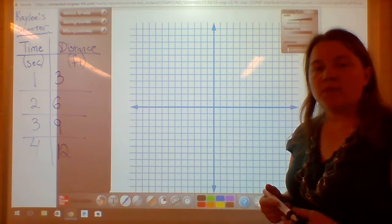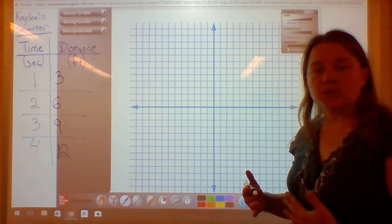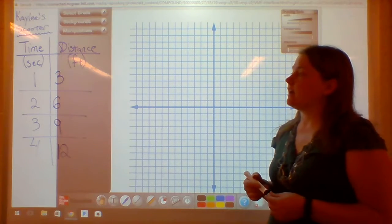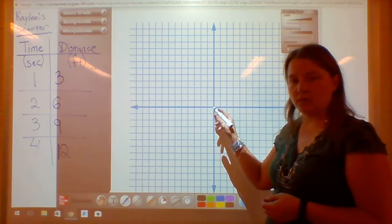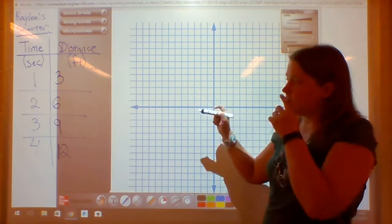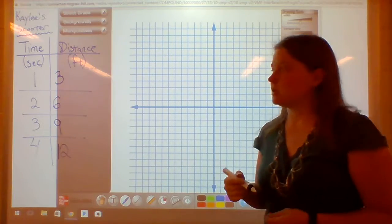Some students might remember that I like to think of coordinate pairs, or ordered pairs, as directions for a video game. So you've got your character who always starts off at the origin, and then these directions are going to tell your character where to go.